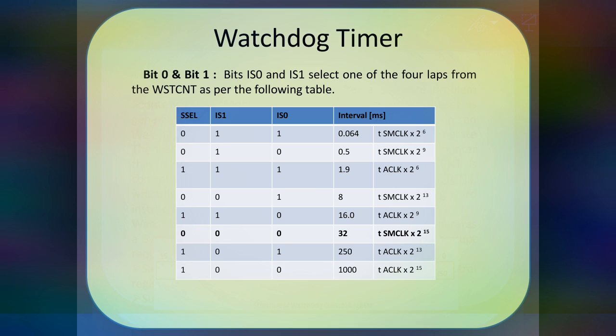In the register table, 8 intervals are provided. This is why we mentioned the first feature of the watchdog timer provides 8 software interval periods. These periods are set by giving information in the SSEL bit, S1 bit, and S0 bit. For example, if we want to provide 32 milliseconds as the clock period, we set SSEL=0, S1=0, S0=0. If we want 1.9 milliseconds, we use a different bit combination.